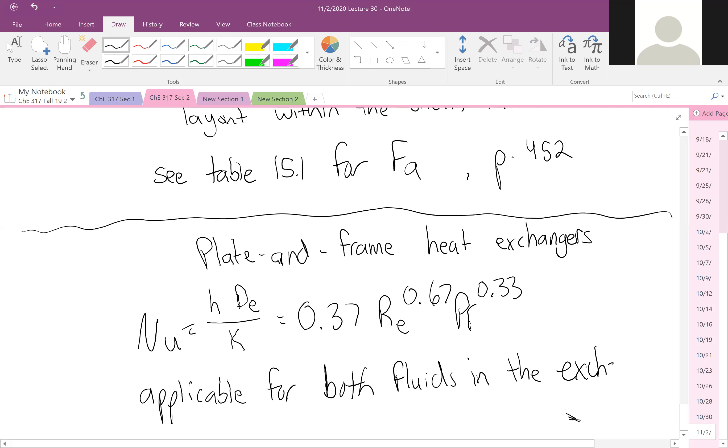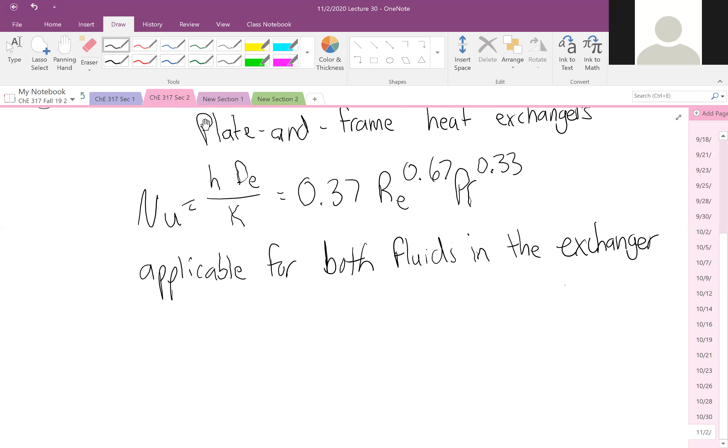Are applicable for both fluids in the exchanger. Another thing you'll notice is that there's no inner or outer diameter. There's an effective diameter, which for most plate and frames is going to be approximated as two times the plate spacing. And finally, for those interested in looking at pressure drop over the plate and frame, it follows our equation that we had in terms of skin friction, F rho U squared L over D.